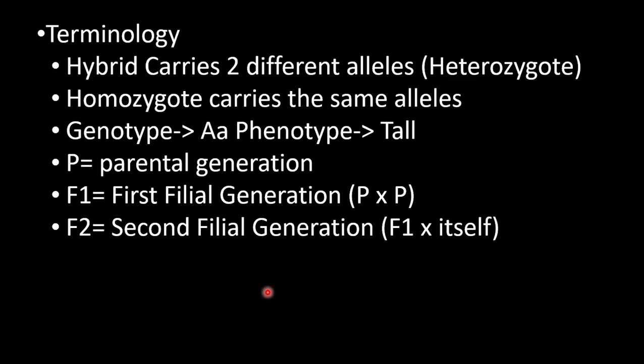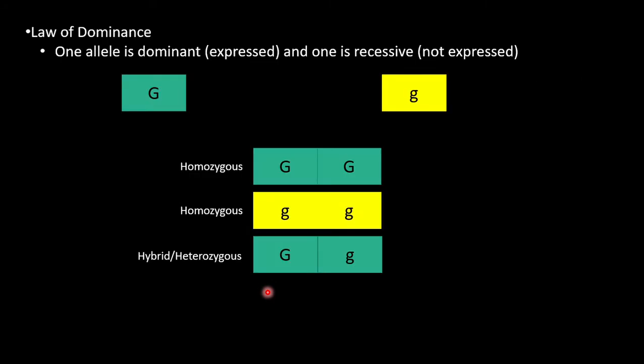Now we have to cover some basic terminology. Alleles are one of two or more alternative forms of a gene. Hybrids are organisms carrying two different alleles for a trait, also known as heterozygotes. Homozygotes carry the same allele, either two dominants or two recessives. The genotype is the actual alleles, while the phenotype is the physical trait that results from that allele. In Gregor Mendel's crosses, he named the parental generation P, the first filial generation F1, and the second filial generation F2.